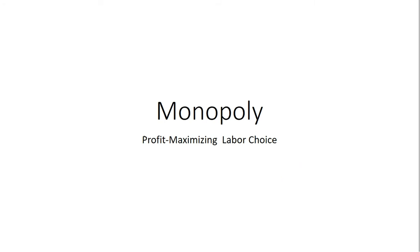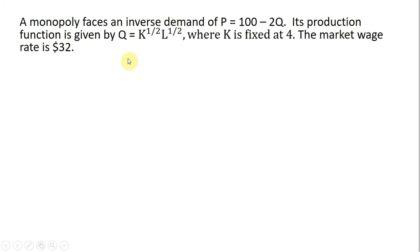Hello, in this video we're going to look at the profit-maximizing labor choice of a monopoly. We have a monopoly firm that faces an inverse demand of P equals 100 minus 2Q. Its production function is given by Q equals K to the 1/2 times L to the 1/2, where K is fixed at 4, and the monopolist has to pay a market wage rate of $32. We want to solve for the profit-maximizing level of labor, and we'll also get the profit-maximizing output and price as well.